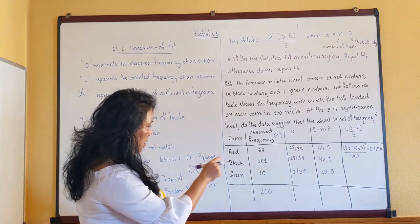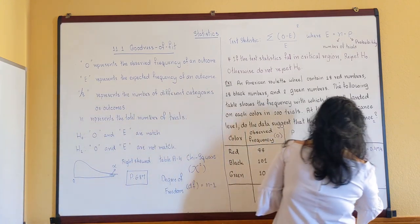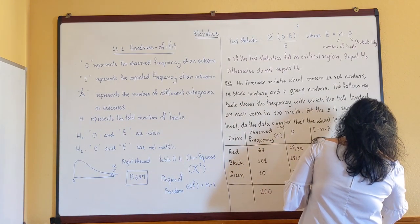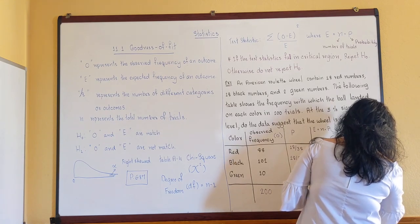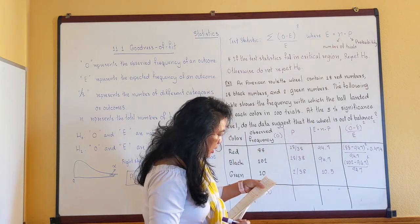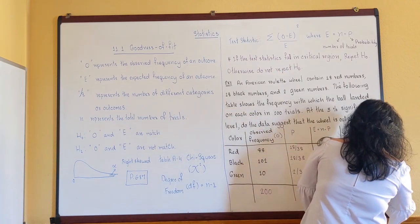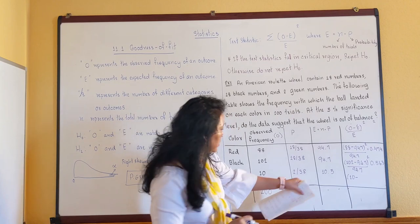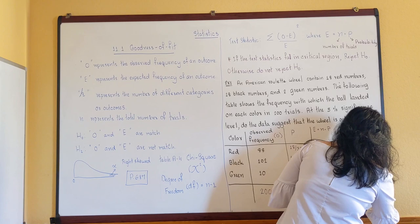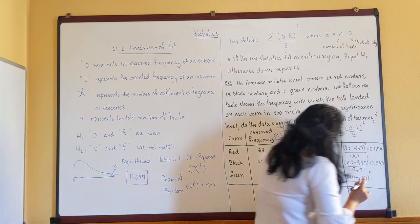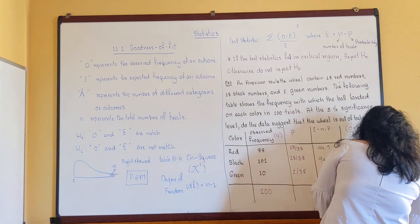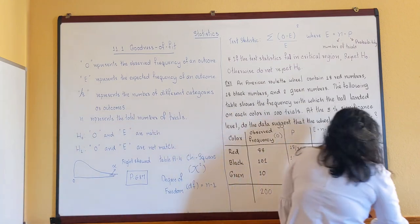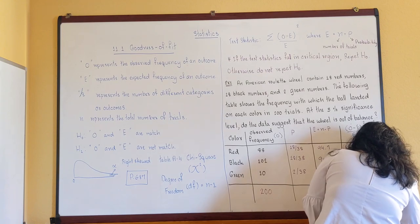The second row: (102 minus 94.7) squared divided by 94.7, which equals 0.563. The last row: (10 minus 10.5) squared divided by 10.5, which equals 0.024. The test statistic is the sum of all these values: 0.474 plus 0.563 plus 0.024 equals 1.061.